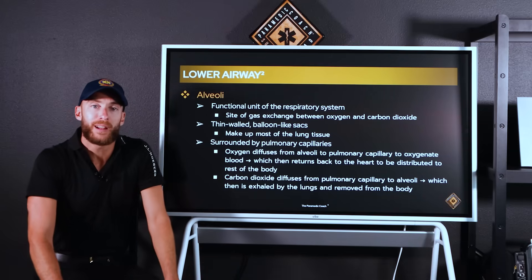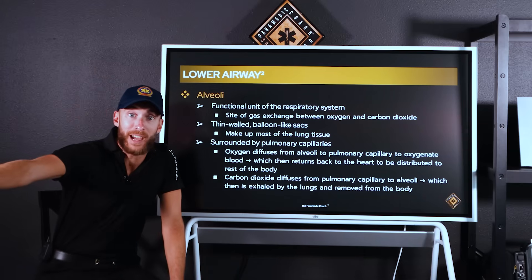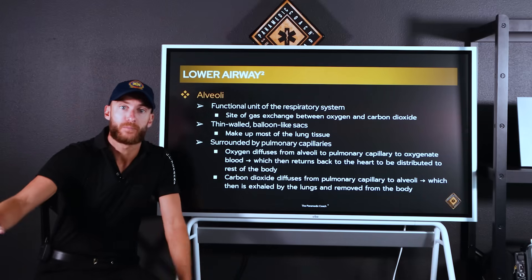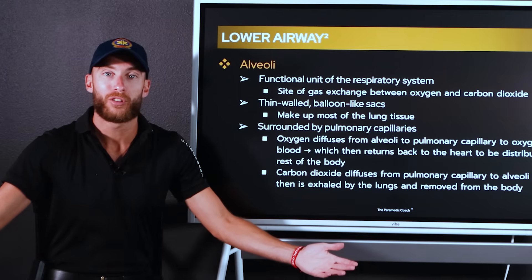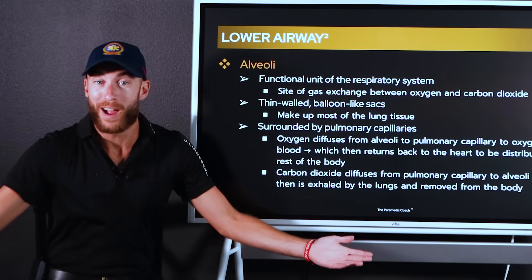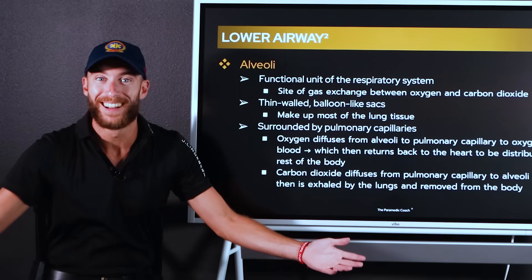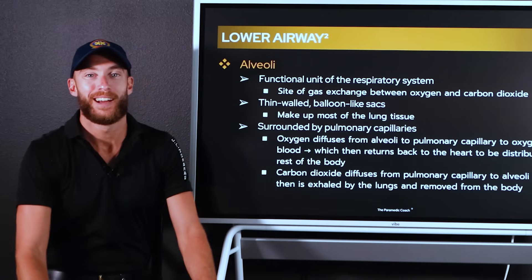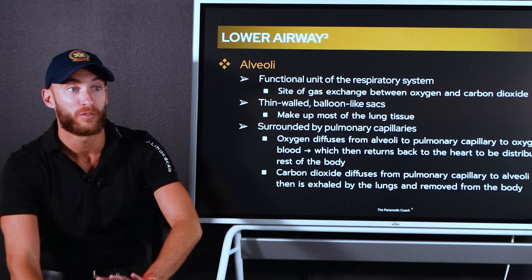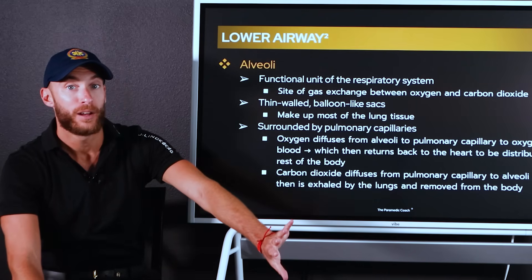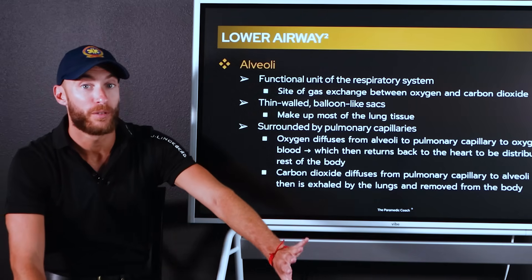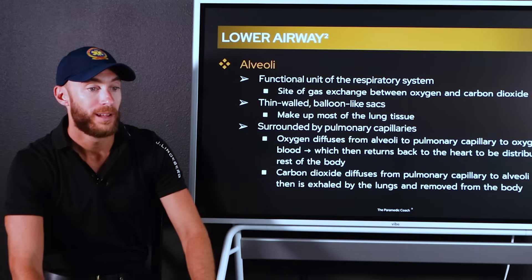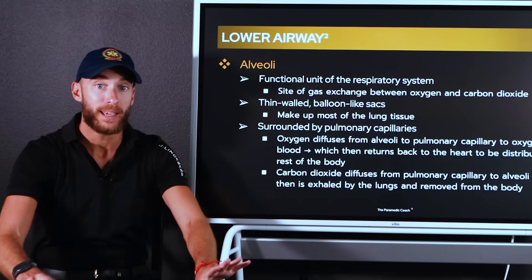That heart blood flow is going to pick up the oxygen via the pulmonary veins that lead back to the heart. Now on the left side of the heart, we have rich, oxygenated blood to be pumped to the rest of our body through the arterial system.